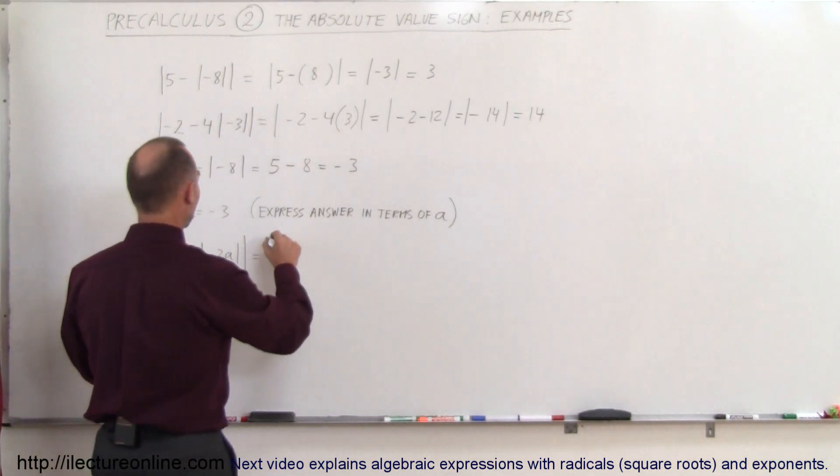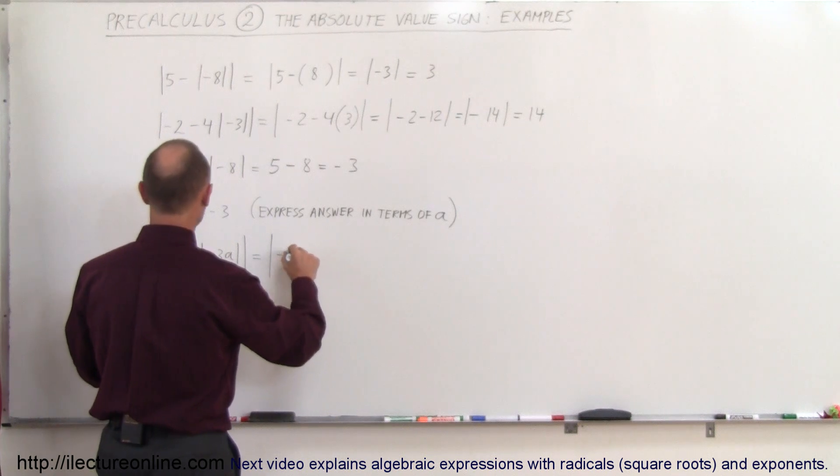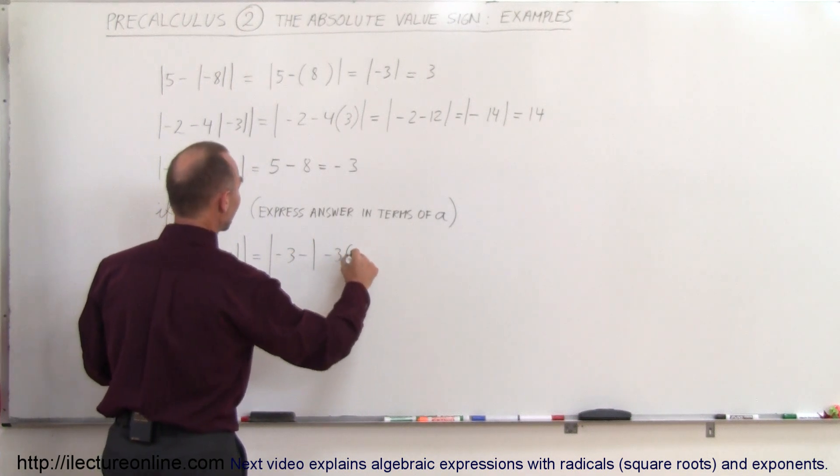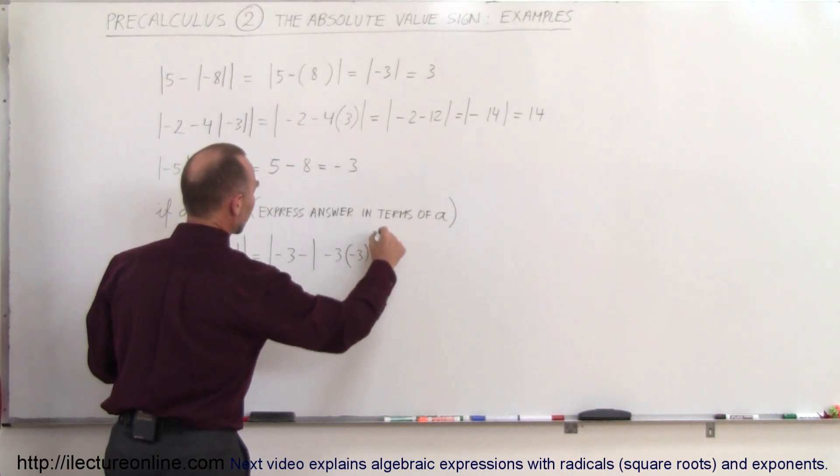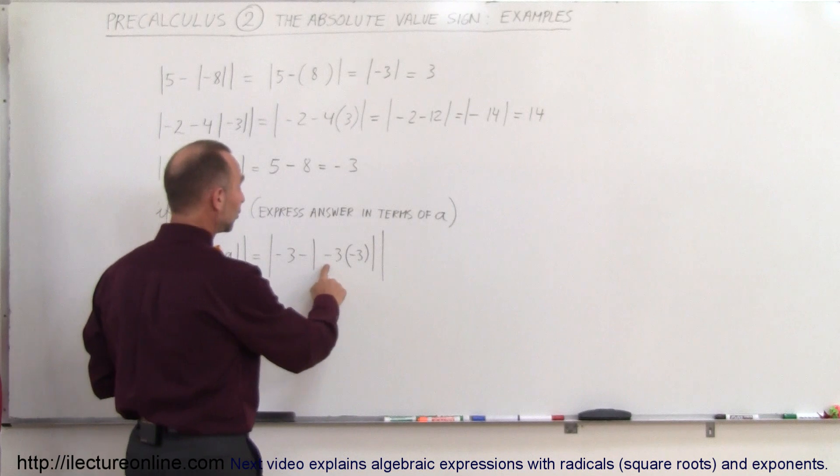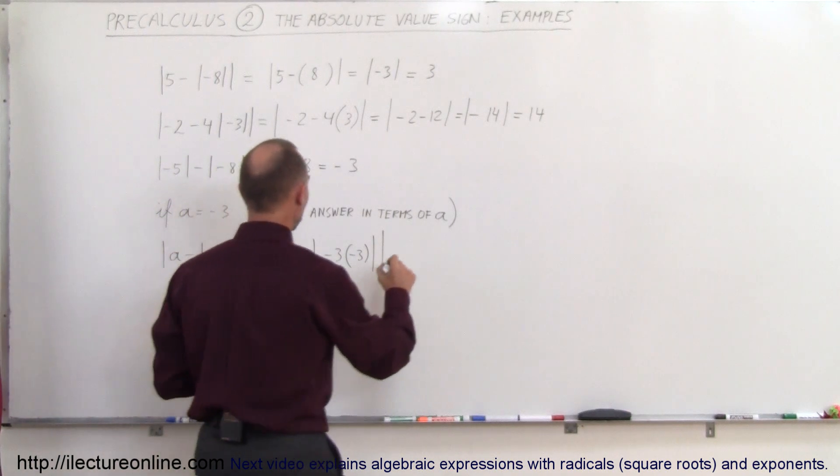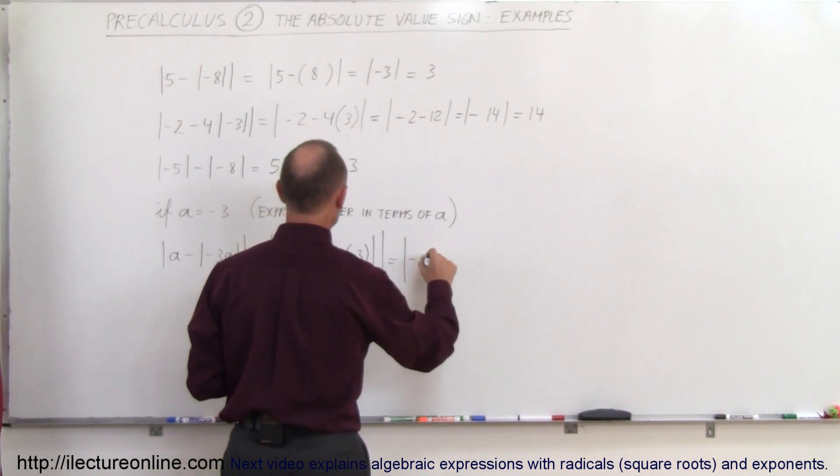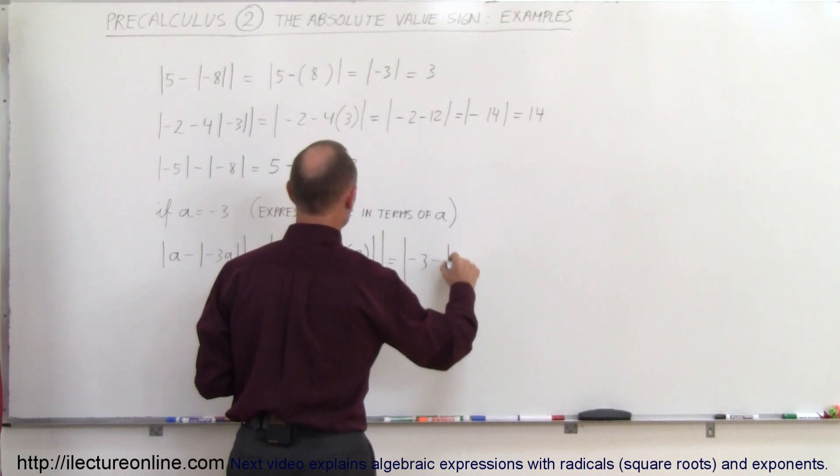So if you do that, you're going to write this as the absolute value of minus 3 minus the absolute value of minus 3 times minus 3, and then you simplify that. Minus 3 times minus 3 is positive 9, so this equals the absolute value of minus 3 minus the absolute value of 9.